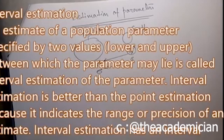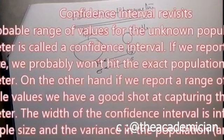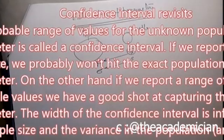Interval estimation has an interval called the confidence interval, which consists of an upper confidence limit and a lower confidence limit. We assign a probability that this interval contains the true population parameter. The probable range of values for the unknown population parameter is called the confidence interval. If we report a point estimate we probably won't hit the exact population parameter, but if we report a range of probable values we have a good shot at capturing the parameter.